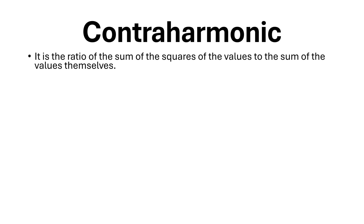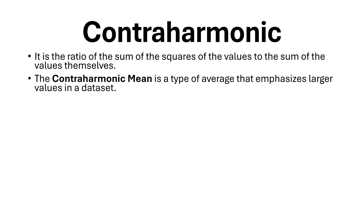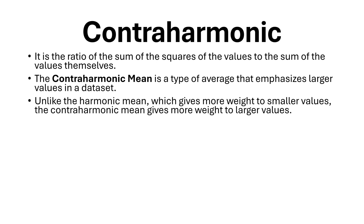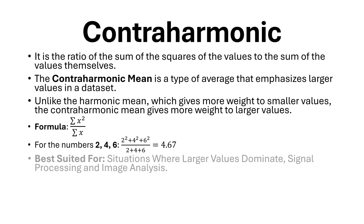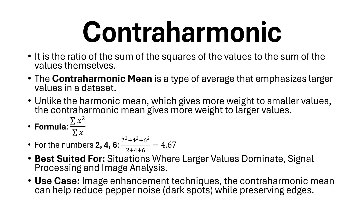Contraharmonic mean. It is the ratio of the sum of the squares of the values to the sum of the values themselves. The contraharmonic mean is a type of average that emphasizes larger values in a dataset. Unlike the harmonic mean, which gives more weight to smaller values, the contraharmonic mean gives more weight to larger values. The formula and calculation are as shown. Best suited for situations where larger values dominate, signal processing, and image analysis. Use case: in image enhancement techniques, the contraharmonic mean can help reduce pepper noise (dark spots) while preserving edges.